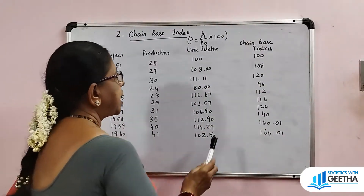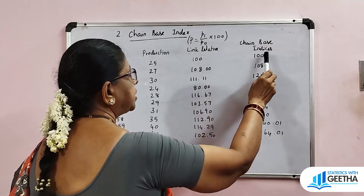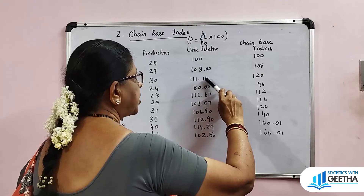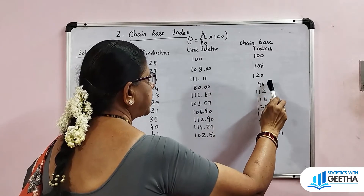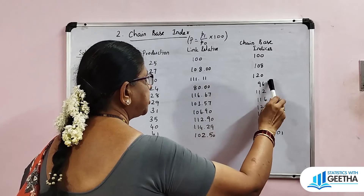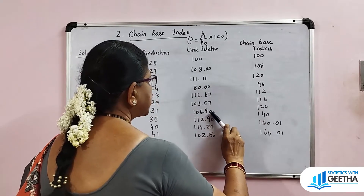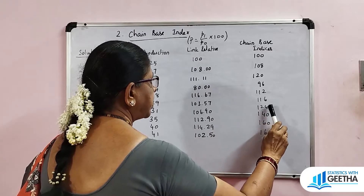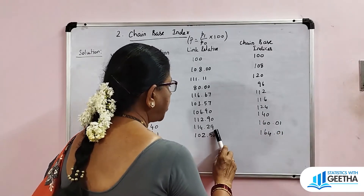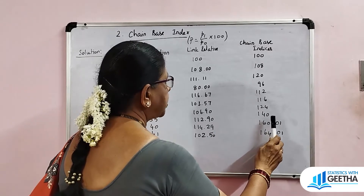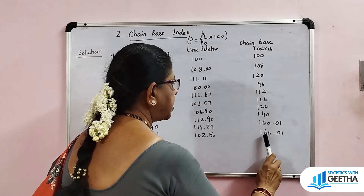Now using the chain base index formula — current year link relative into previous year chain index divided by 100 — we compute: 108 into 100 divided by 100 gives 108. Then 111.11 into 108 by 100 gives approximately 120. Continuing: 116.67 into 124 by 100, then 103.57 into 140 by 100 gives 140. Then 114.29 into 140 by 100 gives 160.01. And 102.50 into 160.01 divided by 100 gives 160.01. These are the chain-based index numbers for one commodity.